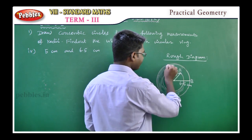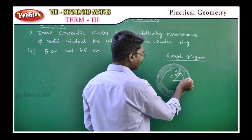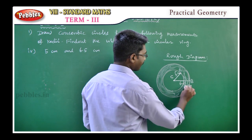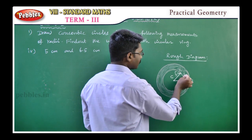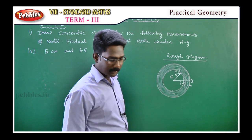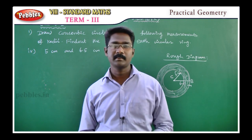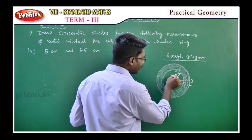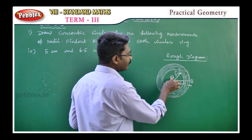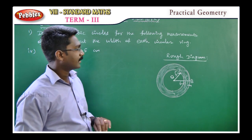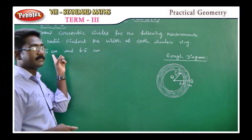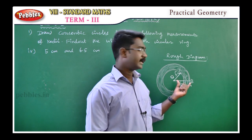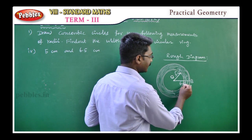The center point is O. OA is the radius of the inner circle — that is 5cm. OB is the radius of the outer circle — that is 6.5cm.